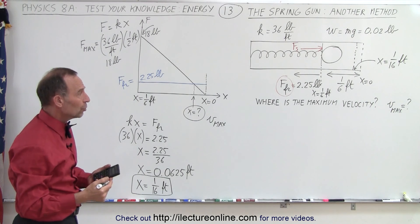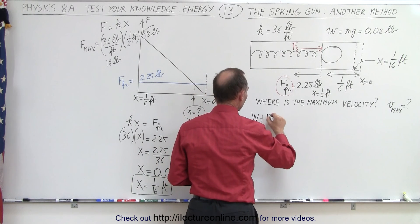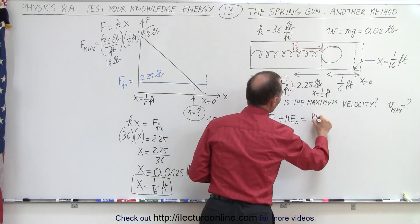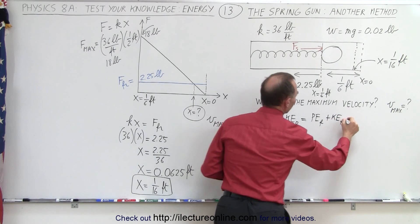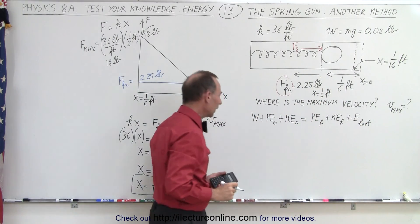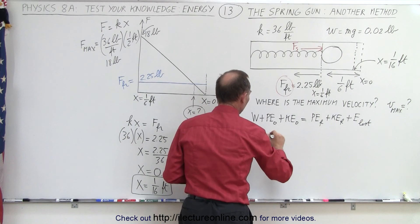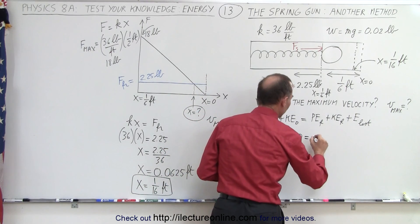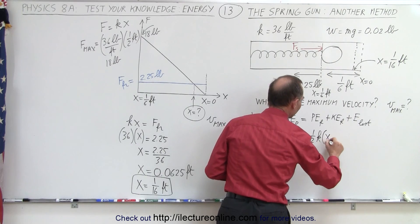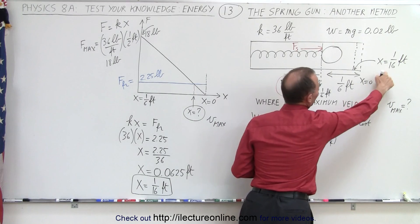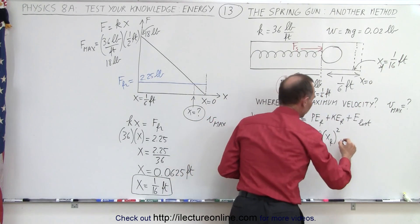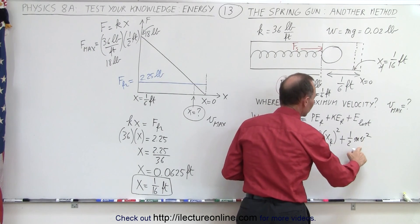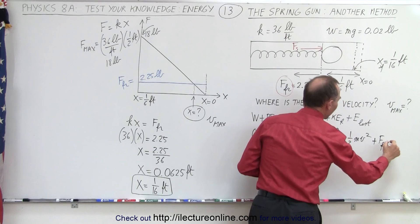The best way to figure that out is to use the energy conservation equation: work plus potential energy initial plus kinetic energy initial equals potential energy final plus kinetic energy final plus energy lost due to friction. No work is put into the system, so that's zero. Initial potential energy is one-half kx squared. There's no motion at the very beginning. Potential energy final is one-half k times x final squared, where x final is 1/16th of a foot. Kinetic energy is one-half mv squared, and energy lost is the friction force times the distance.